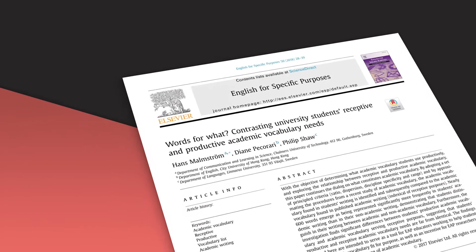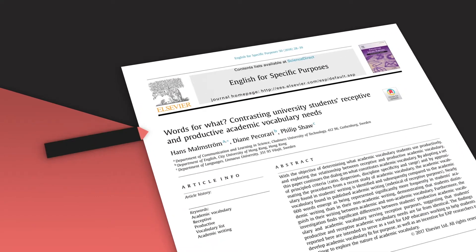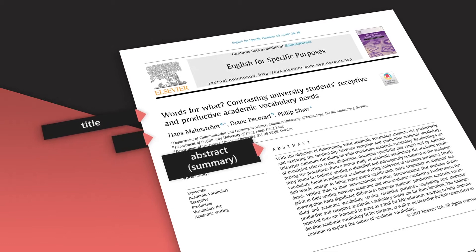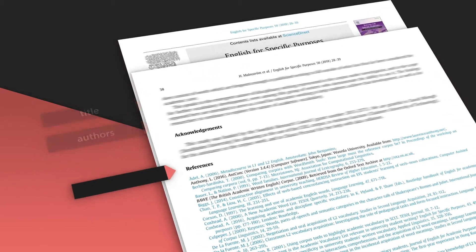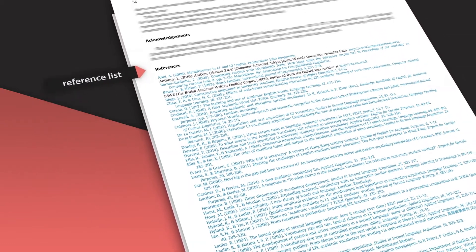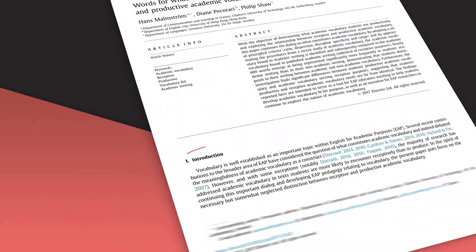An article like this has a number of parts: a title, an abstract or summary, the names of the authors, and a reference list. Our focus today is on the four main sections: Introduction, Methods, Results, and Discussion.